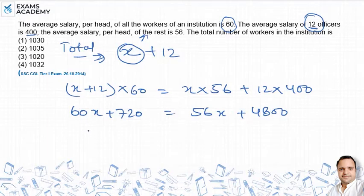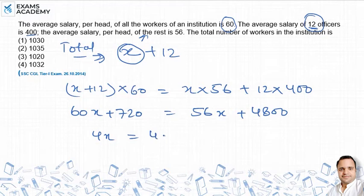Rearranging: 60X minus 56X equals 4800 minus 720, which gives 4X equals 4080.